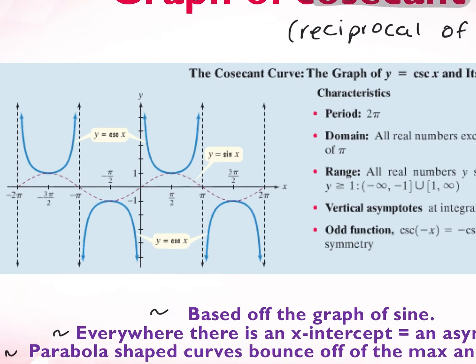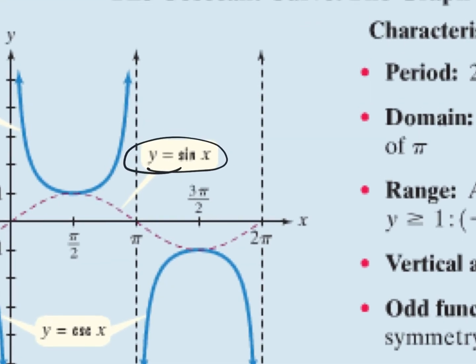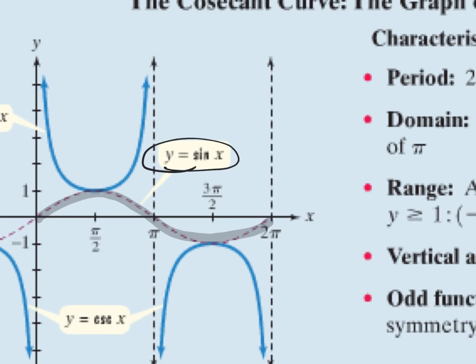If we had graphed original sine of x, one period would look like this: at zero, it goes up to the amplitude at pi over two, comes back down to zero, goes to negative one, and then comes back up to zero. That would be my initial curve for sine.